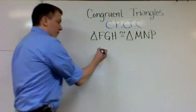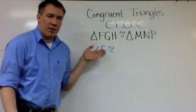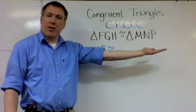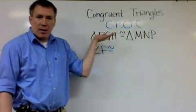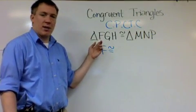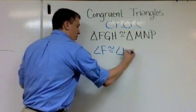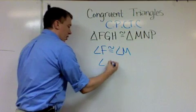So let's start with angle F. Angle F is going to be congruent to one of these angles in the other triangle, but it's got to be a corresponding part. So angle F corresponds—it's in the first place here with angle M, it's in the first place there—so it's congruent to angle M. And so I just go down the list: G is congruent to angle N because they're in the second place.